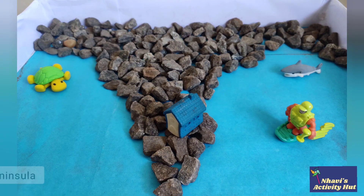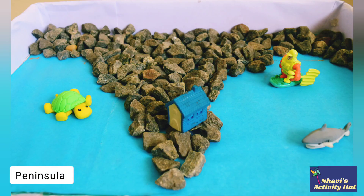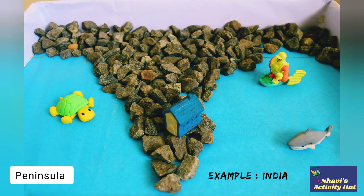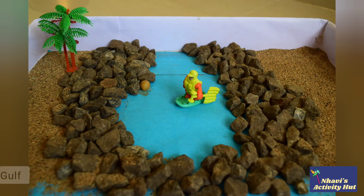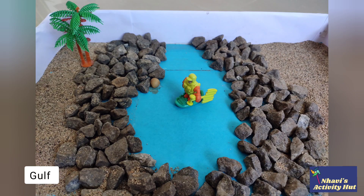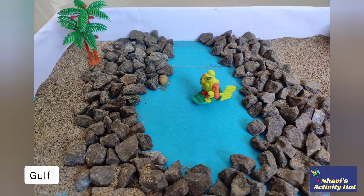Peninsula is a piece of land that is almost entirely surrounded by water but it is connected to the mainland on one side. Gulf is an area of water that is surrounded by land on three sides.